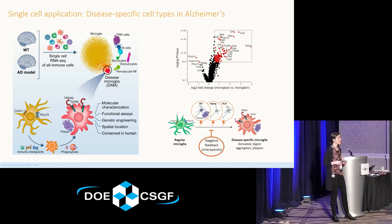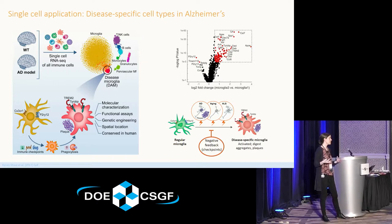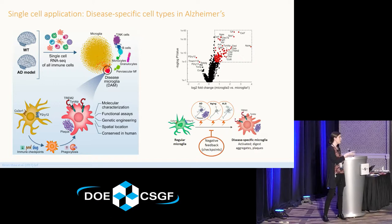One thing to point out is that often when people want to profile a specific cell type, they'll do flow sorting using known markers. But in this case, the known markers would not have been able to identify this particular subtype because it had different surface markers. By using single-cell without biasing up front what we're looking for — not saying 'we only want cells that express these certain surface markers' — by being agnostic up front, we are able to discover new things that we don't know about already that can be disease-relevant.